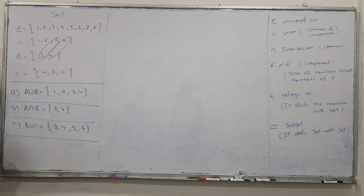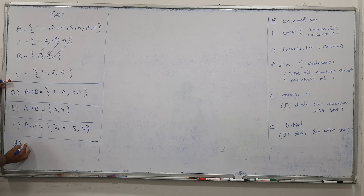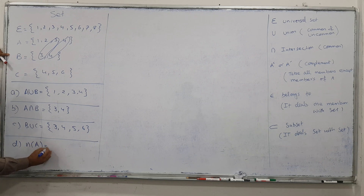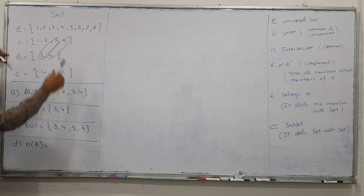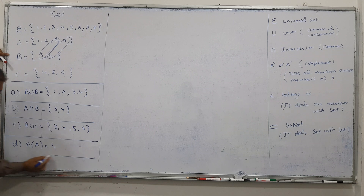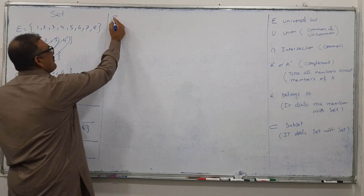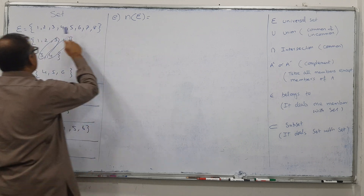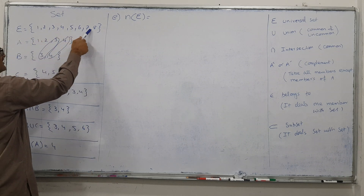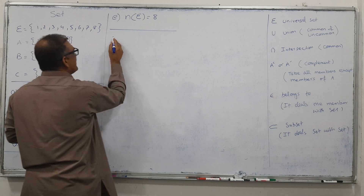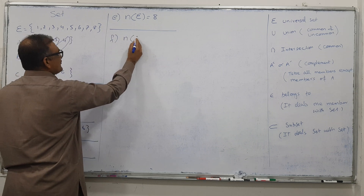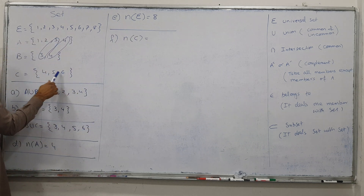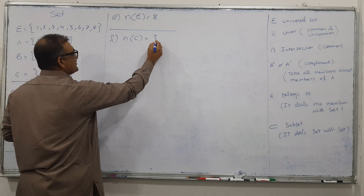Now shifting to the next part: how many members — N stands for number of members. In set A, count: 1, 2, 3, 4 — we have 4. Similarly, what is the number of members of universal? Count: 1, 2, 3, 4, 5, 6, 7, 8 — so the answer is 8. What is the number of members of C? C has 1, 2, 3 members. That's simple.